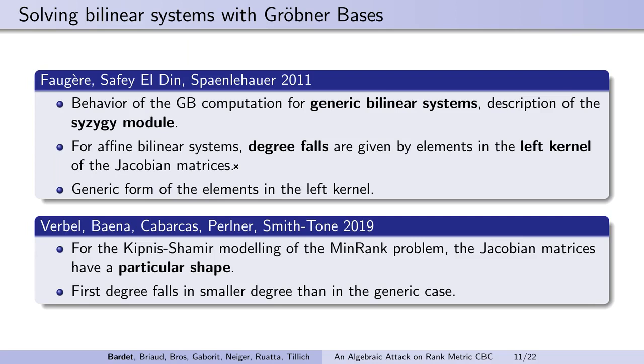For generic affine bilinear systems, the first degree falls are related to the left kernels of the Jacobian matrices associated to the system. More recently, in PQCrypto last year, several authors showed that for the Kipnis-Shamir modeling of the MinRank problem, the Jacobian matrices have a particular shape that leads to degree falls in a much smaller degree than in the generic case. In fact, the Gaborit-Ruatta modeling also has the same particular shape, and we will use it to produce a new algebraic modeling for the rank decoding problem.